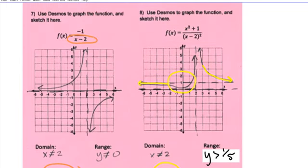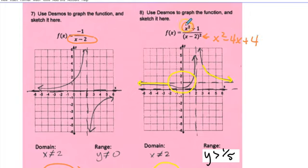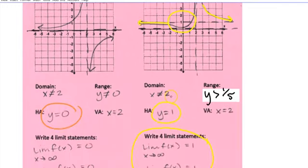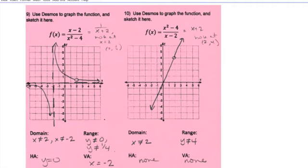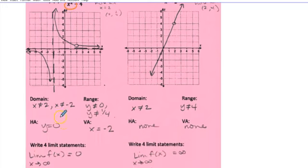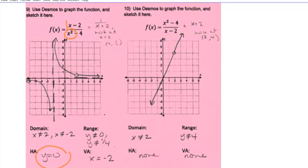Number eight: you have x squared on the top, and if you multiply out the bottom — (x minus 2) squared gives x squared minus 4x plus 4 — you'd have x squared on the bottom too. So they're the same degree, and the ratio is 1 over 1, giving a horizontal asymptote of y equals 1. Number nine: the degree of the denominator is 2, the degree of the numerator is 1, so it's bottom-heavy — horizontal asymptote of y equals zero. Number ten: the degree of the numerator is greater than the degree of the denominator — top-heavy — so there is no horizontal asymptote.